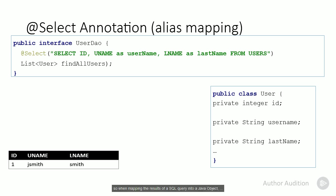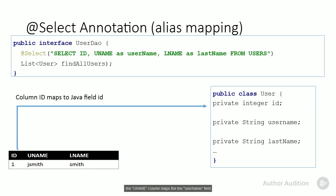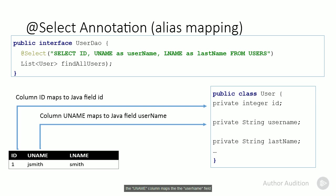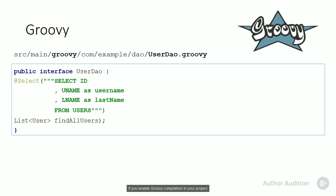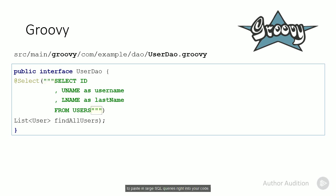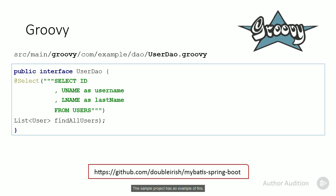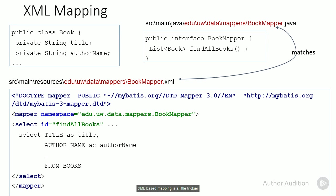So when mapping the results of a SQL query into a Java object, the ID column maps to the ID field, the UNAME column maps to the username field, and the LNAME column maps to the last name field. If you enable Groovy compilation in your project, you can use the triple-quote feature to paste large SQL queries right into your code. XML-based mapping is a little trickier, since the SQL statements are no longer co-located with our interface, but placed in a separate XML file.